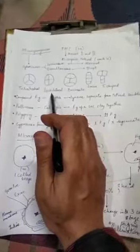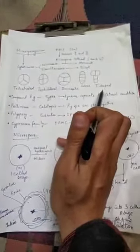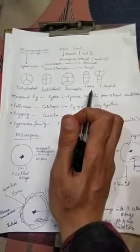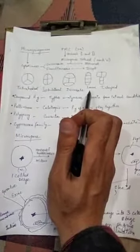Dicots generally carry tetrahedral type of arrangement of the microspores in tetrad. Monocots generally carry isobilateral. There are other various types also possible. These are the various diversity of the arrangement of the pollen grains or microspores in a tetrad.